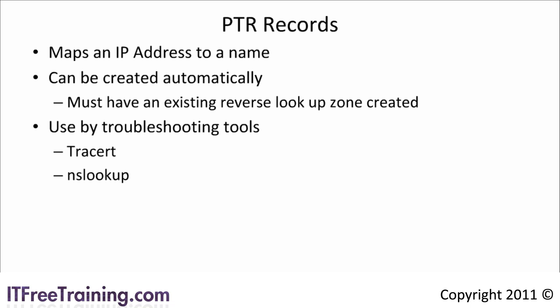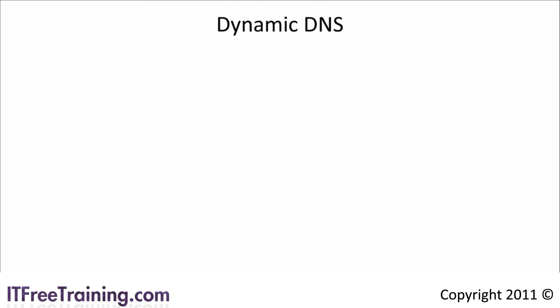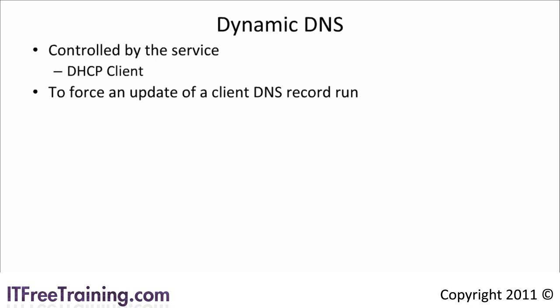In the old days you had to update your DNS records manually. With Windows Server 2000 came the ability for clients to update their DNS records dynamically — this is controlled by the DHCP Client service. If your client is not automatically updating its records in DNS, make sure this service is running correctly. If you want to force the client to update its settings, run the command 'ipconfig /registerdns', which will force the client to update its DNS records on the DNS server immediately.